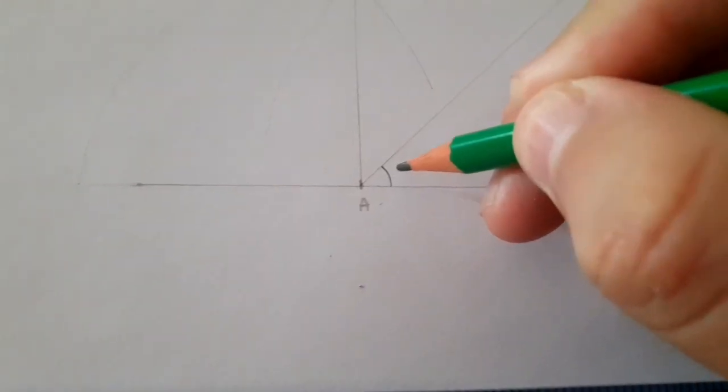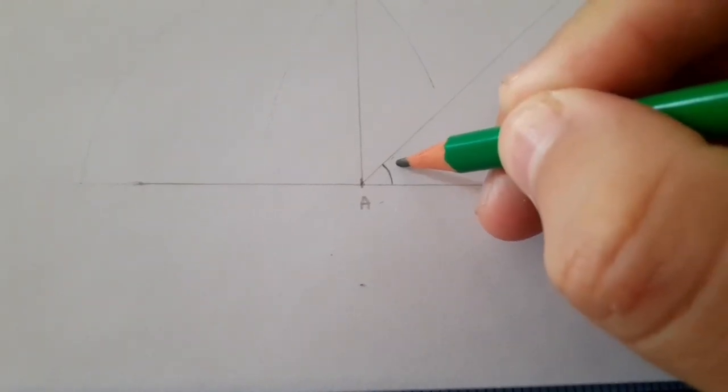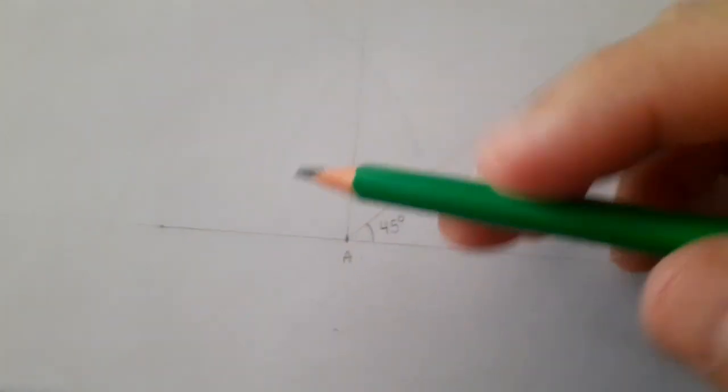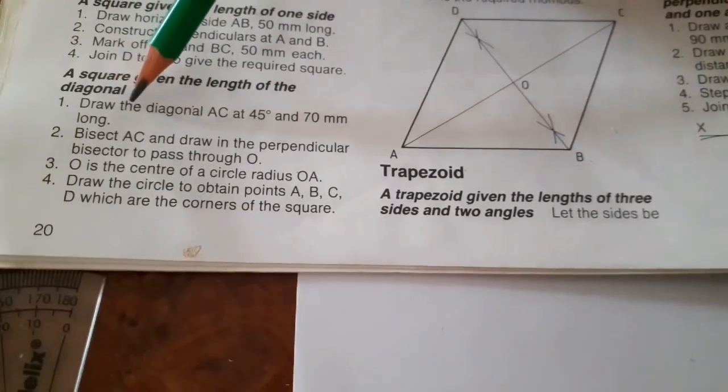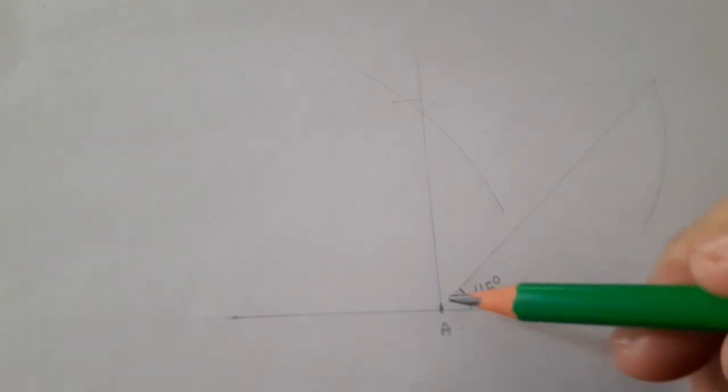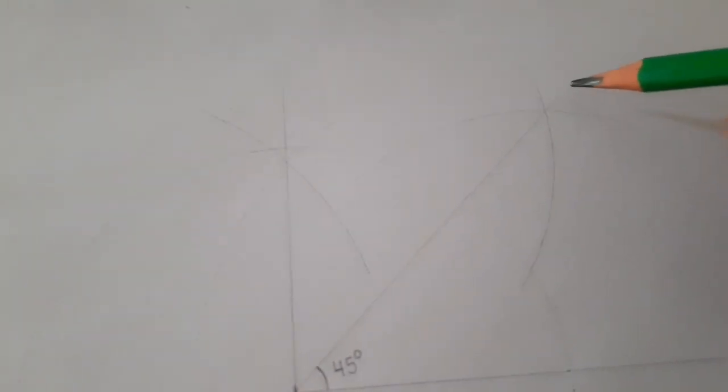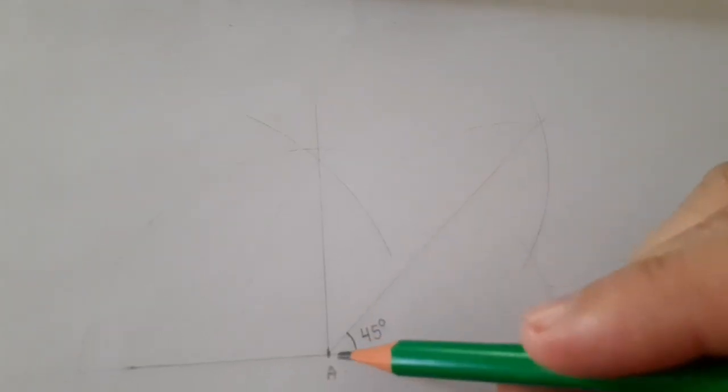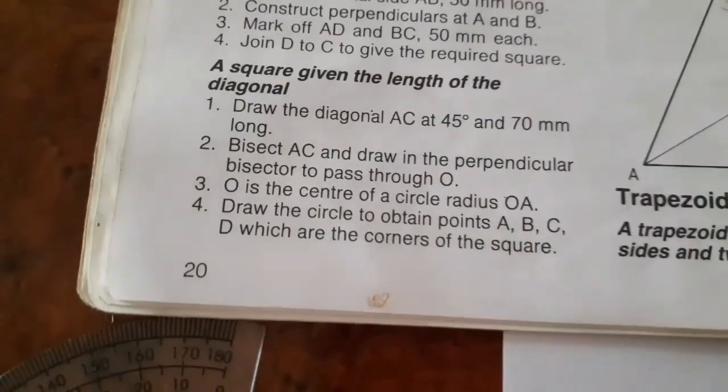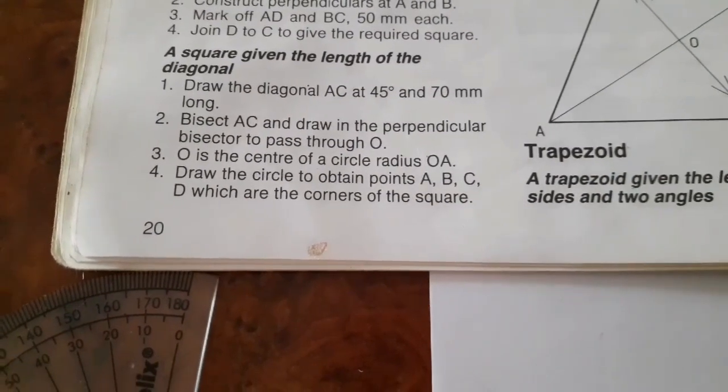And that is the 45 degrees, so we have the 45 degrees here at vertex A. Following from the question, this line should have a length. Draw the diagonal AC at 45 degrees and 70 millimeters long. So this line is supposed to be 7 centimeters long. So you measure it with your ruler and you put the point C.